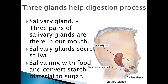There are three glands that help in the process of digestion in our body. First is the salivary gland. Three pairs of salivary glands we can see here in our mouth. Salivary glands secret saliva. This saliva mixes with food and converts starch material into sugar.